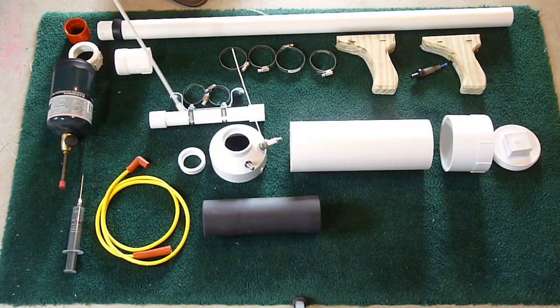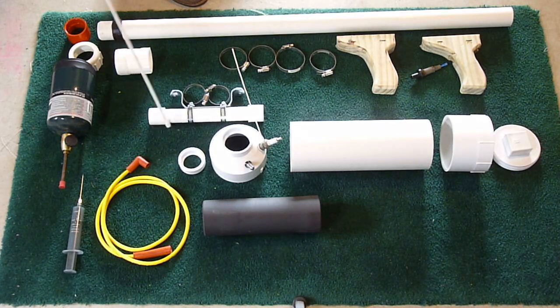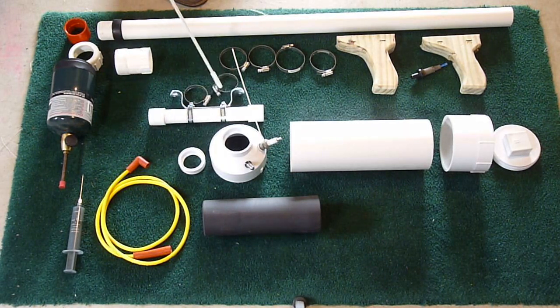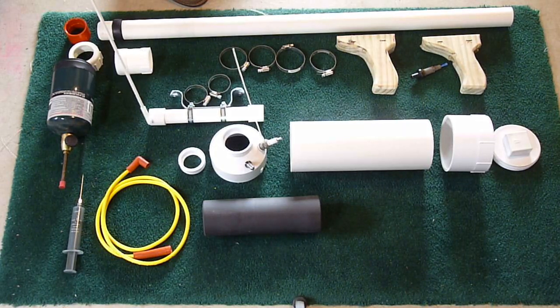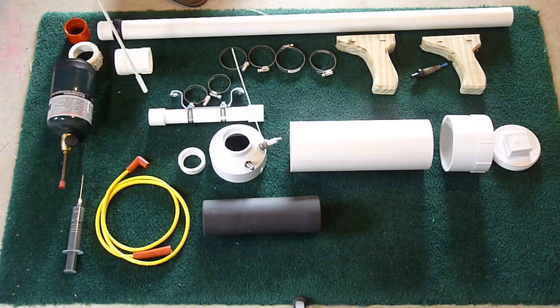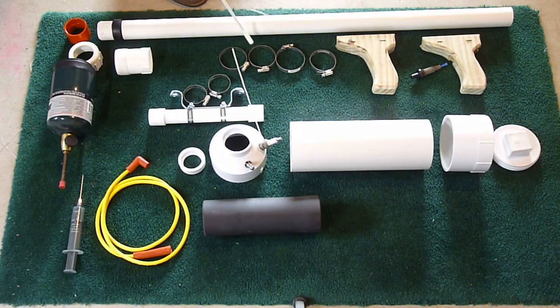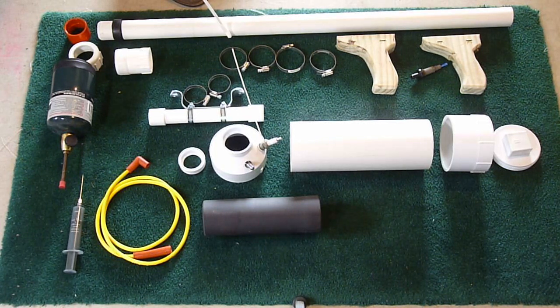And so the other part here is a kind of a scope that I made up, thinking about putting some crosshairs in there. It's basically just a one inch piece of PVC and two end caps that are cut off. And so those are going to clamp on to the barrel here.